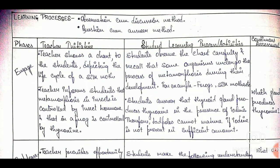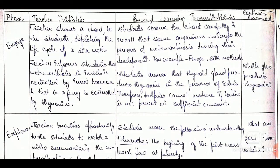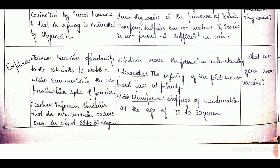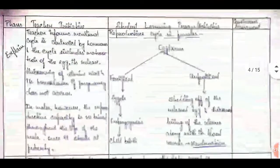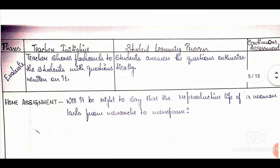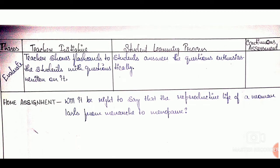Next comes learning processes. Here we have combined two activities together: observation-cum-discussion method and question-cum-answer method. After that we draw the tables. In the first phase we have Engage, then Explore, then Explain. This is a 5E lesson plan, so there are five E's: Engage, Explore, Explain, Extend, and lastly Evaluate. After that we have the home assignment. So this was the third lesson plan from the chapter.